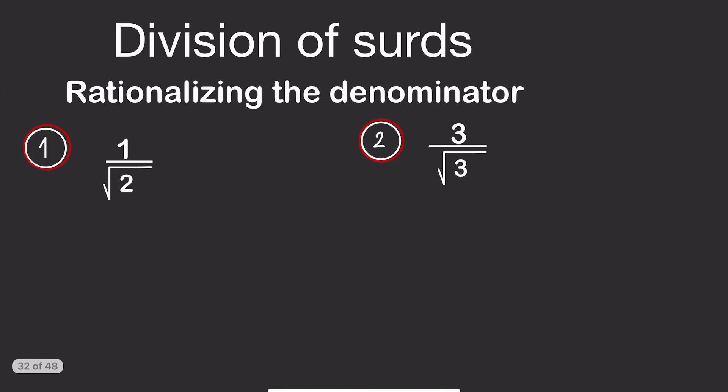Let's now move to this other part of division, which involves rationalization of the denominator. Rationalization of the denominator — what does it mean? It means if you have a fraction where the denominator is a square root, to remove the square root you need to multiply.